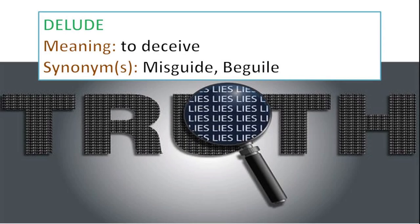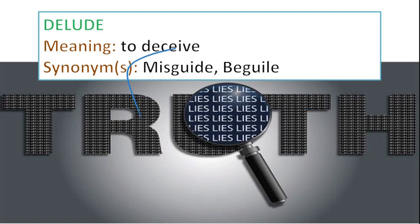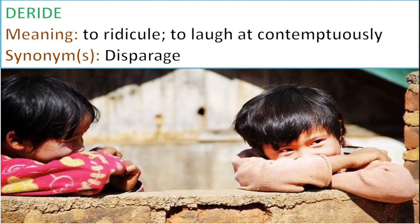Delude means to deceive or to beguile — a word we have already discussed — or to misguide. To delude is simply to trick or to fool, often in relation to even your own self. Like if you delude yourself into thinking that the mithai your mom made is low in calories and fat, you'll be disappointed to find out she's actually put a lot of ghee or butter in it. So to delude means tricking or fooling your own self into believing something that does not really exist or might not be true.